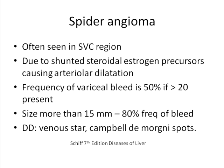Spider naevi occur due to shunted steroidal estrogen precursors causing arteriole dilatation. Earlier literature has shown that in a patient with more than 20 spider naevi, the frequency of variceal bleed is around 50%. A size greater than 1.5 cm or 15 mm correlates with a very high presence of variceal bleed.